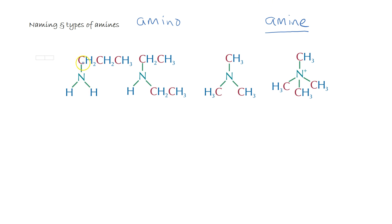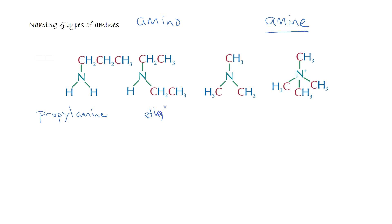We carry on as we would previously — we look at the side group. We've got three carbons so this is propylamine. Now if we've got two side groups which are both the same length, two carbons in length, we now have ethylamine. And because we've got two of them we have diethylamine.